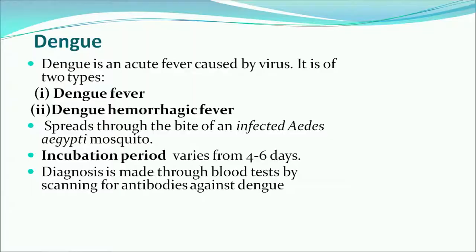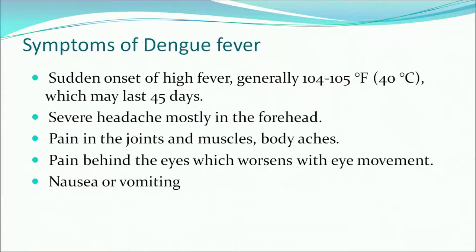The next disease is dengue, an acute fever caused by a virus. It is of two types: dengue fever and dengue hemorrhagic fever. It spreads through the bite of an infected Aedes aegypti mosquito. Incubation period is four to six days and it can be diagnosed with blood tests. Symptoms include sudden onset of high fever — generally 104 degrees Fahrenheit lasting up to 4-5 days — severe headache, pain in joints and muscles, body aches, pain behind the eyes, nausea and vomiting.